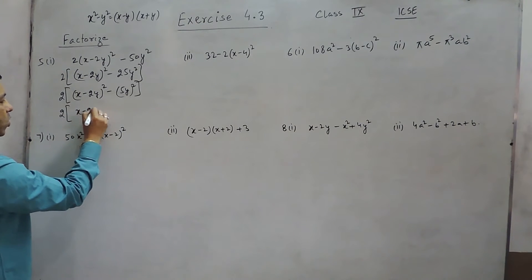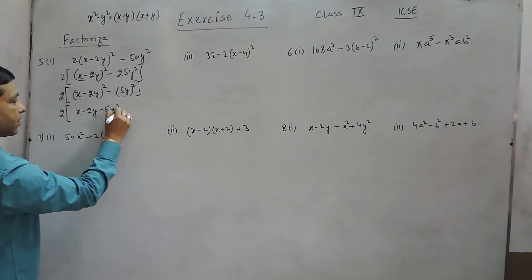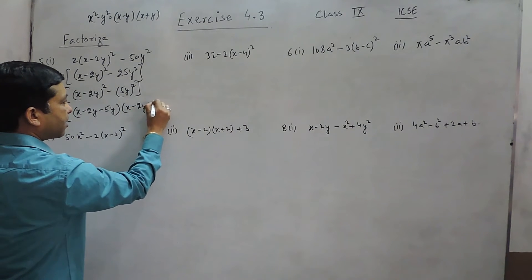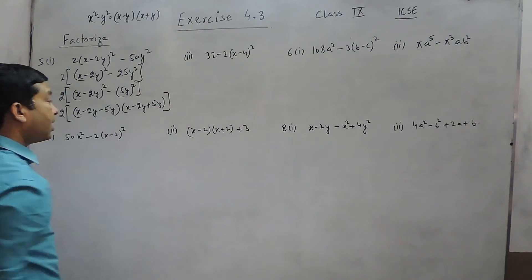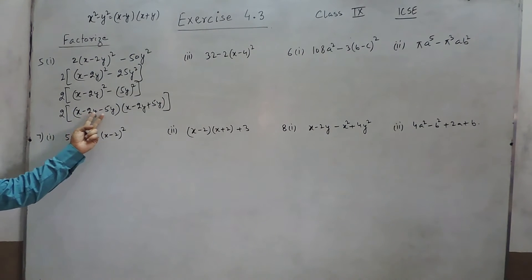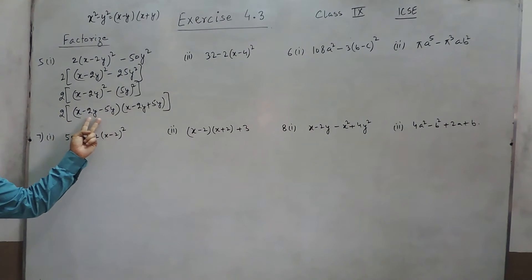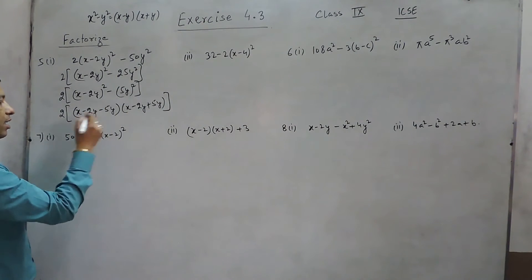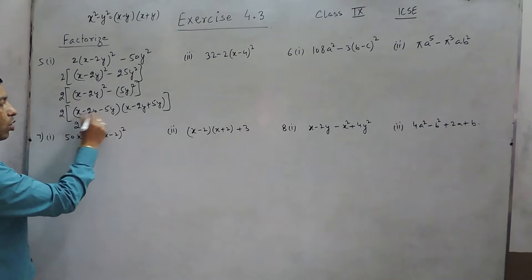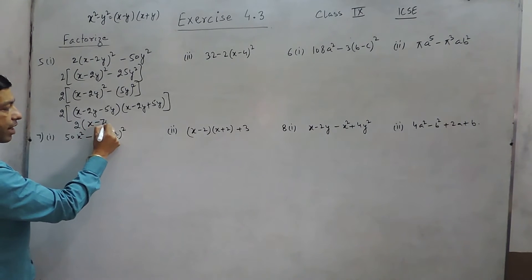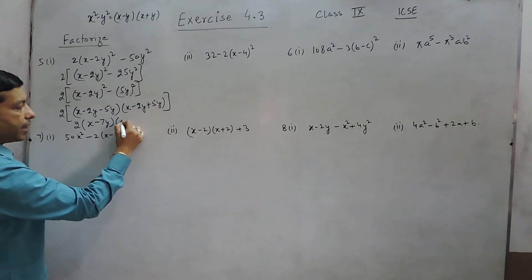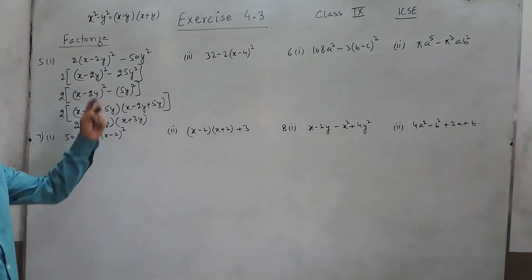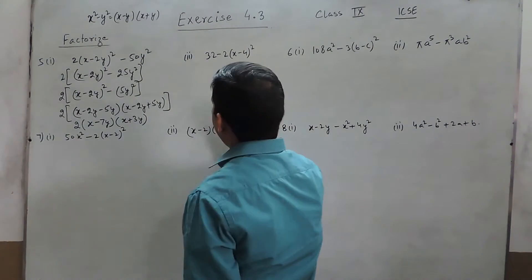So it can be written as (x - 2y)² - (5y)². Further, 2 can be taken as common: one bracket is (x - 2y - 5y) and another bracket is (x - 2y + 5y). If there are two terms with the same variable, we can add or subtract them. The final result is 2 × (x - 7y)(x + 3y).